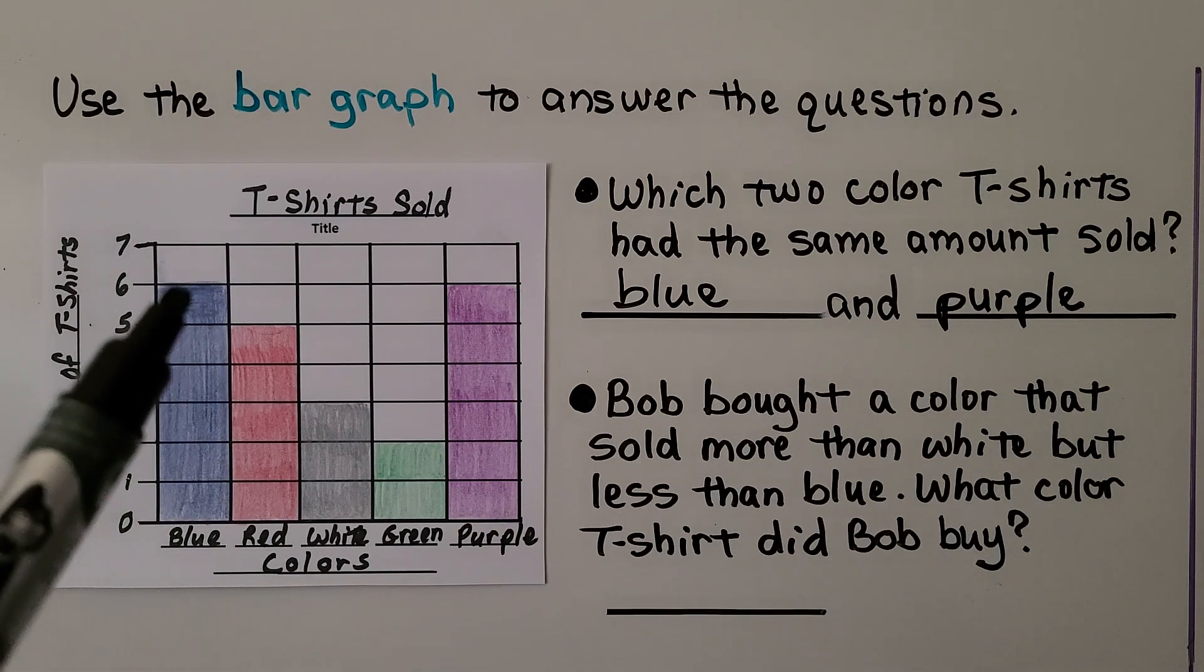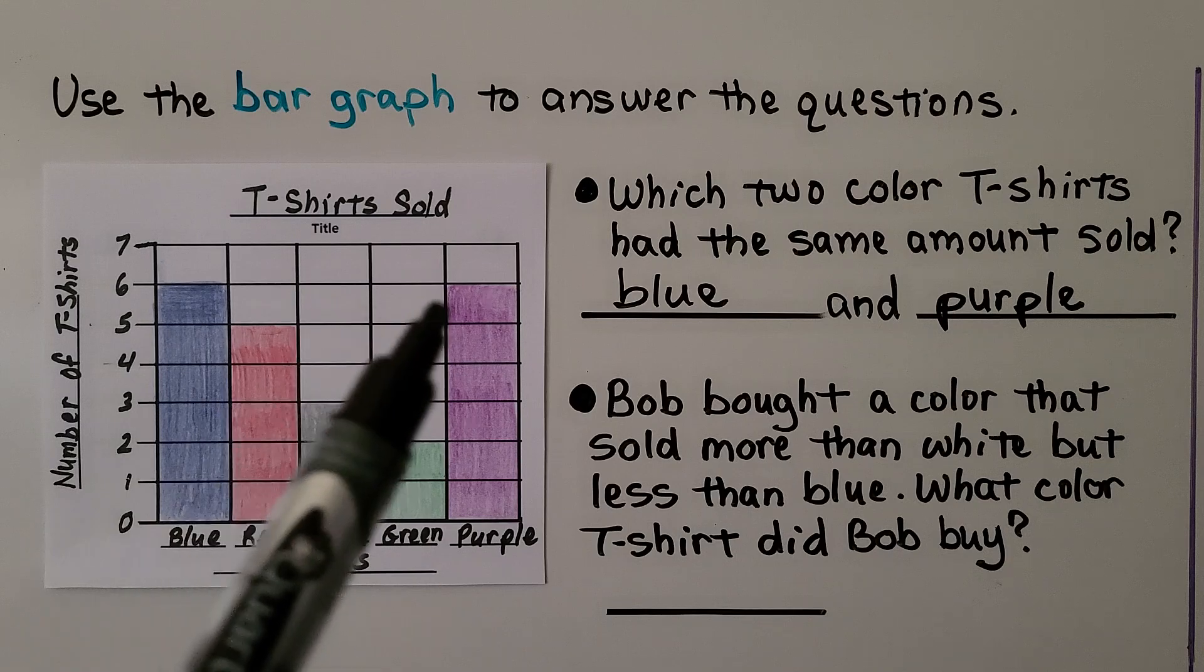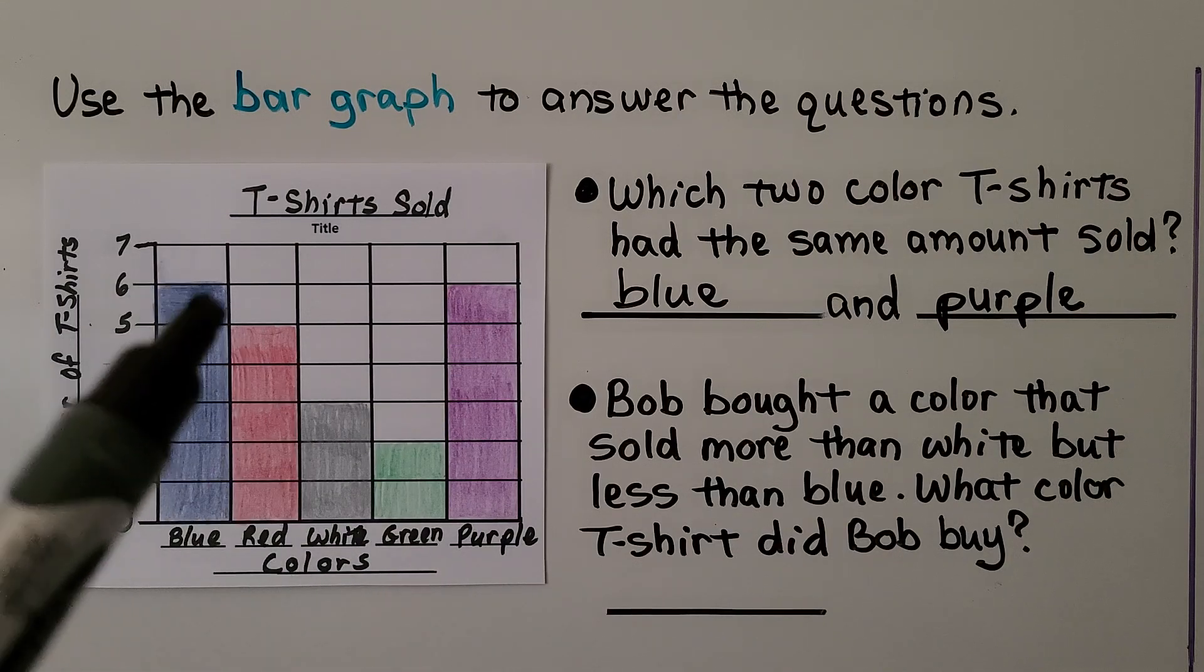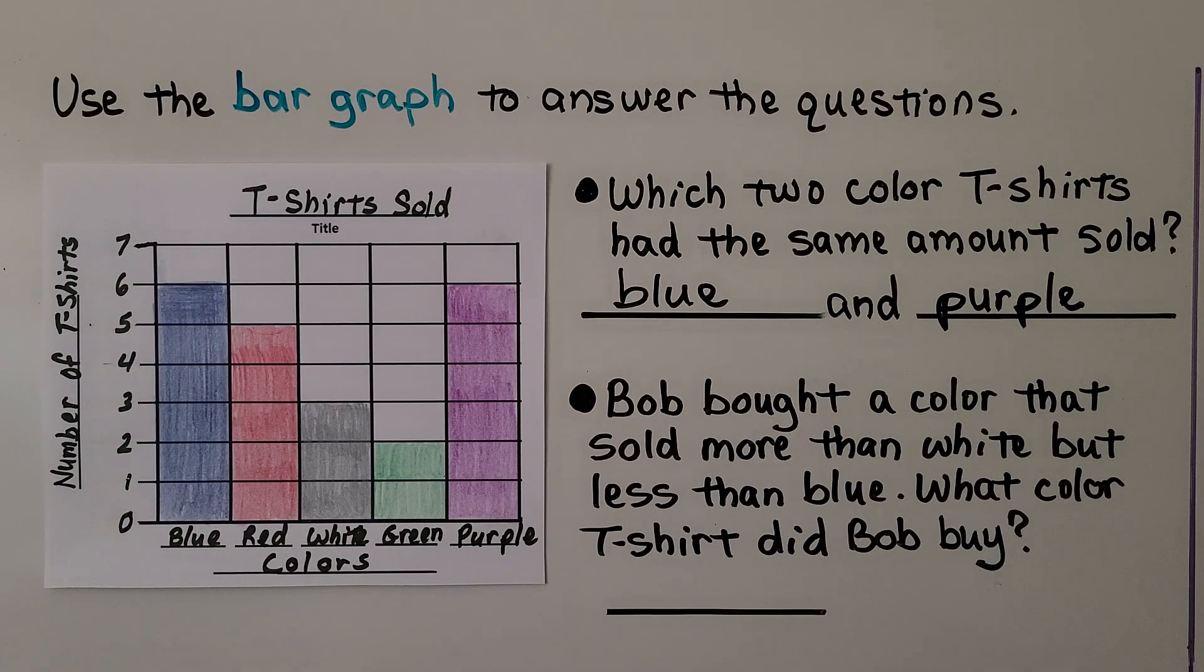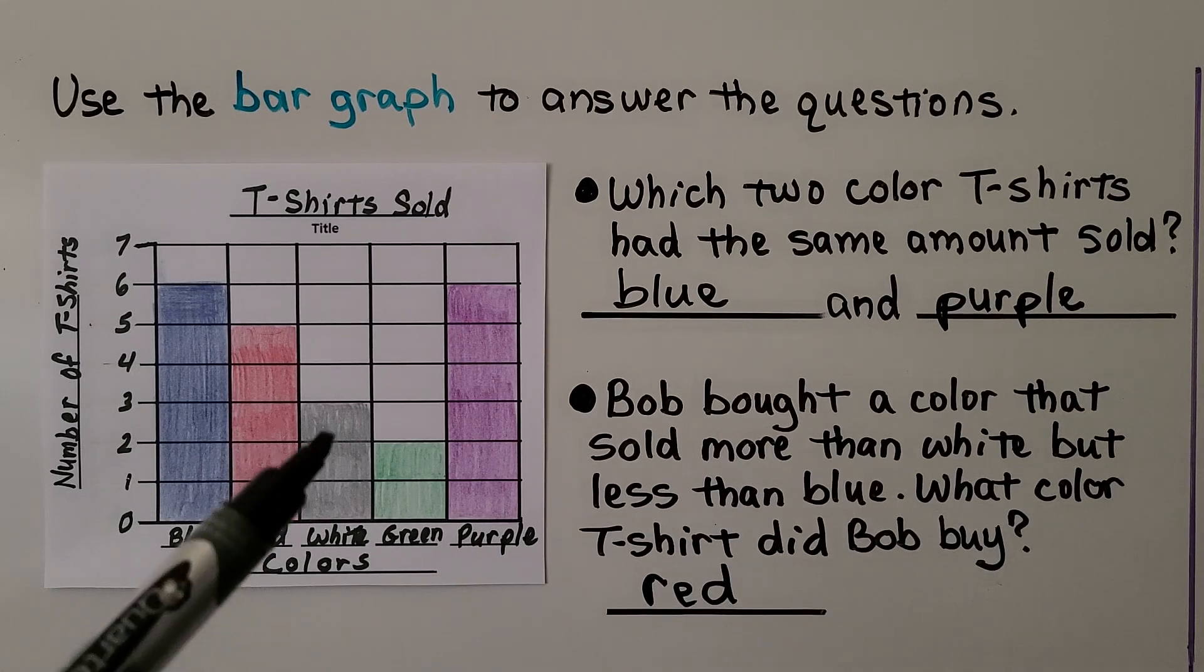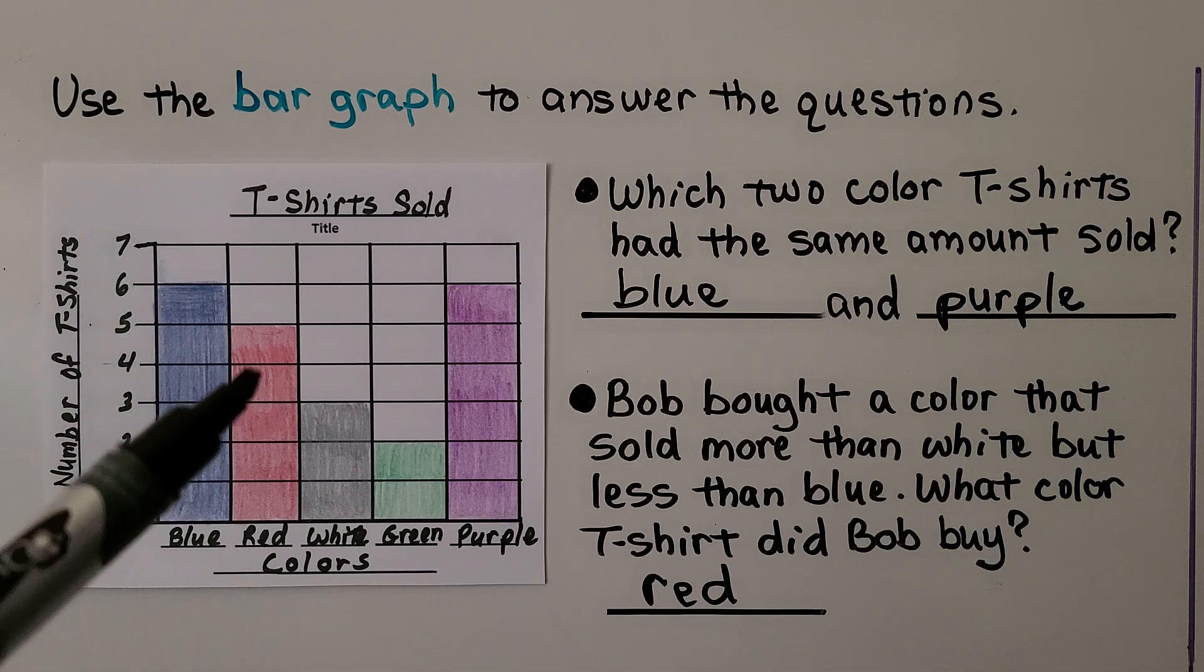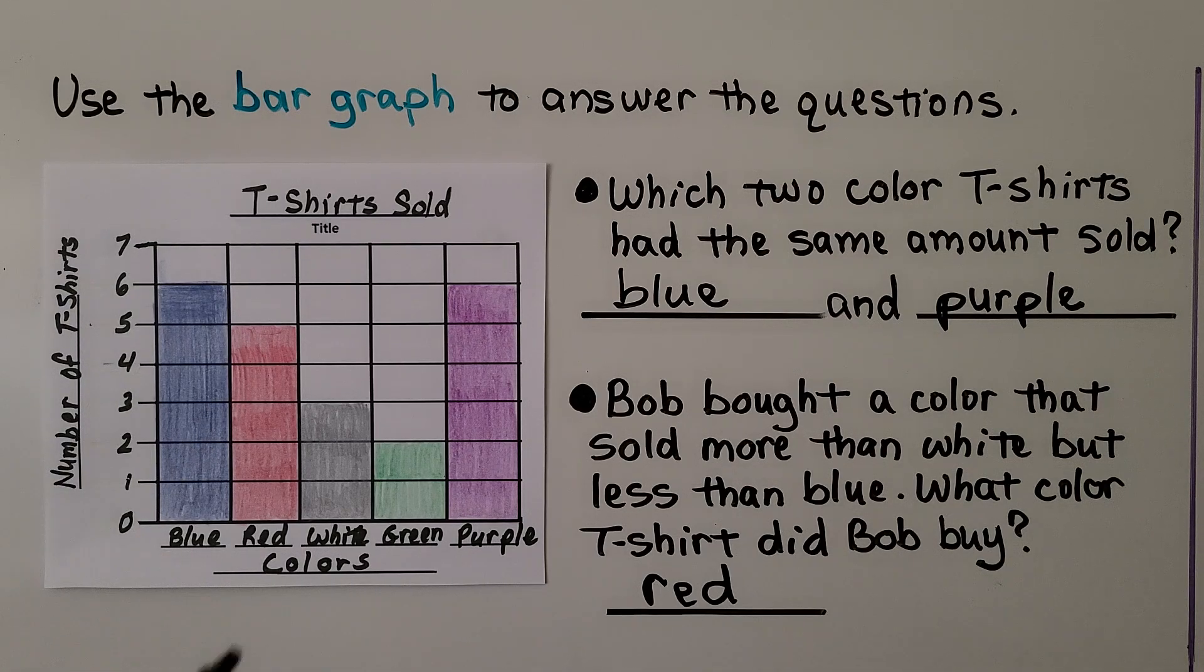And if you look, blue and purple are the same, so it would have to be also less than purple. So the only one that sold more than white and less than blue would be red. Bob must have bought a red t-shirt. We needed to find a number that was more than three and less than six. The only one that fit that would be red at five.